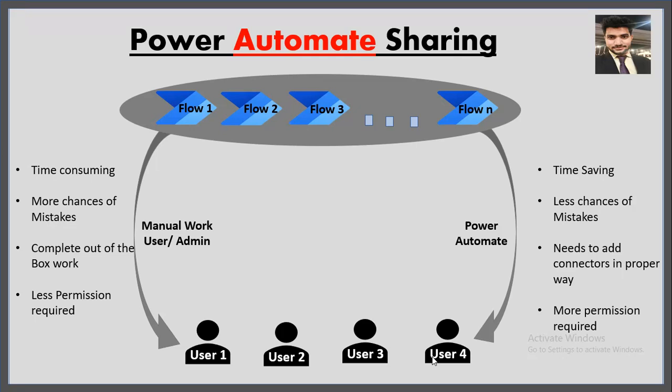The fourth point is less permission required. For manual work, if the user is the owner or co-owner of any flow, they can simply share that flow with anyone. But in the case of Power Automate, the person creating the flow must have valid permissions to share flows with other users.